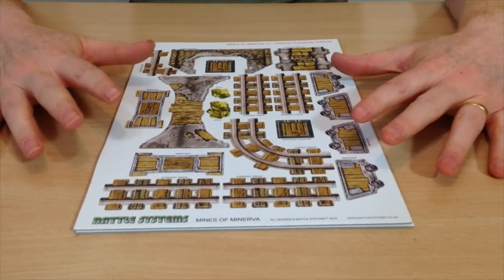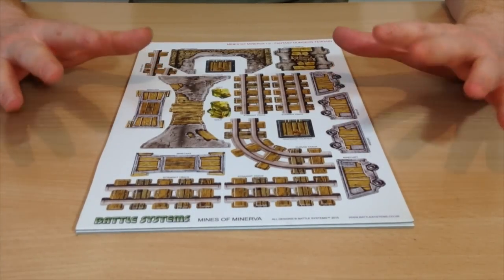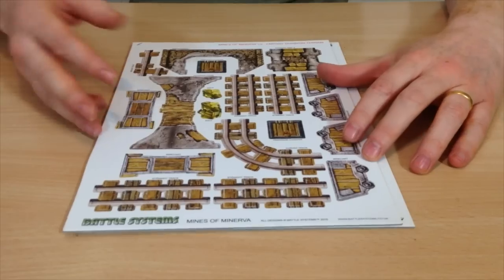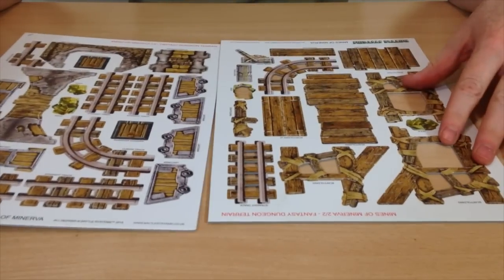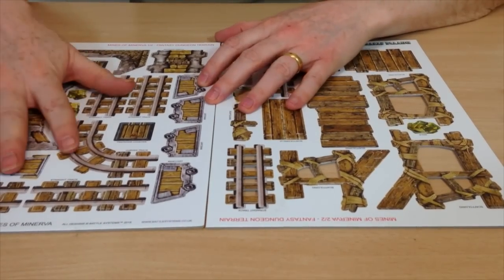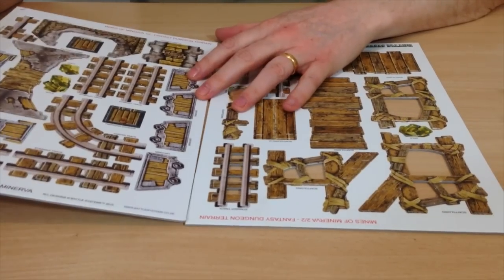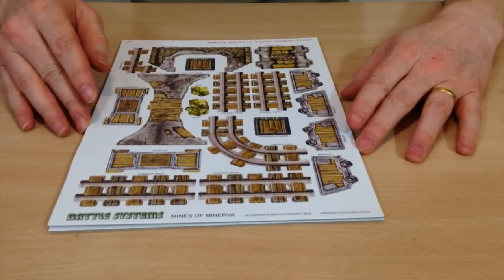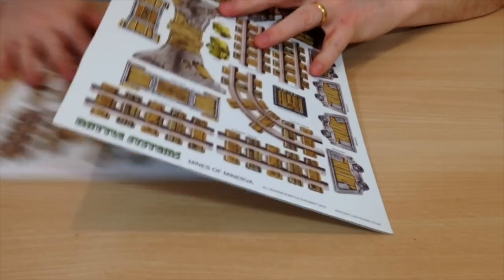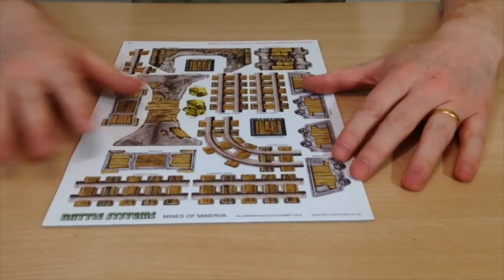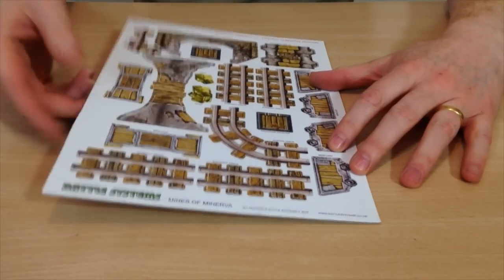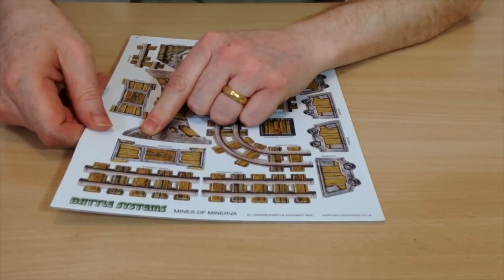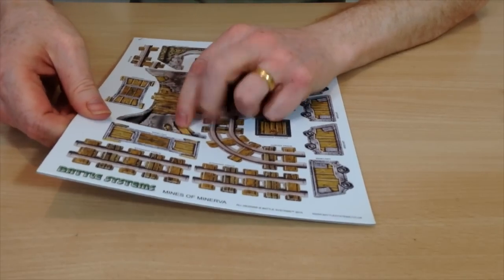Okay, so now we have the Mines of Minerva. This is actually a two-sheet set, so if you've got this add-on, it actually has two sheets to it. Let's start with sheet one of two. This has basically got the main mine entrance on it, which is the main part to start with, so we can pop that out.